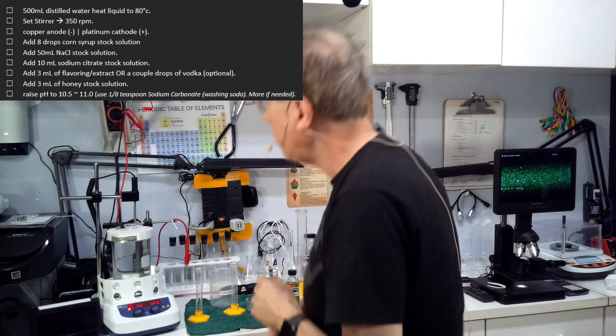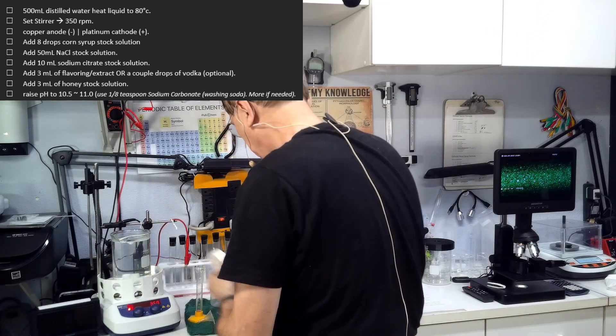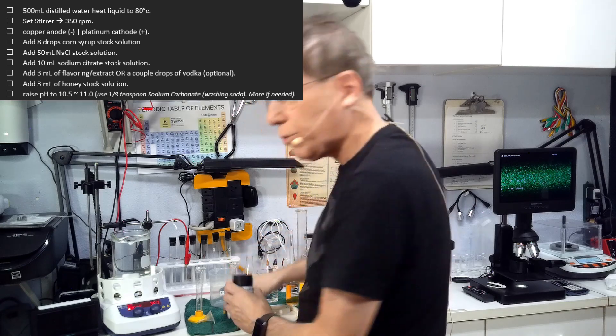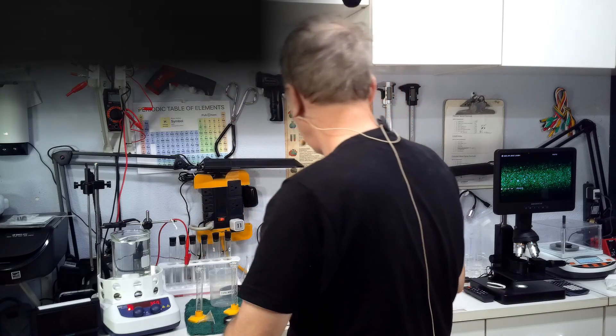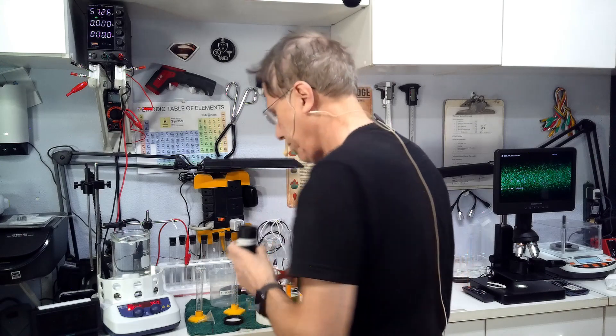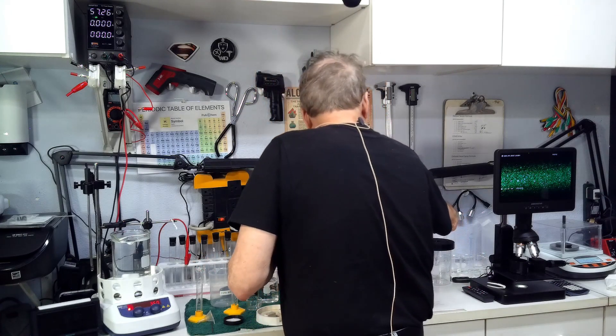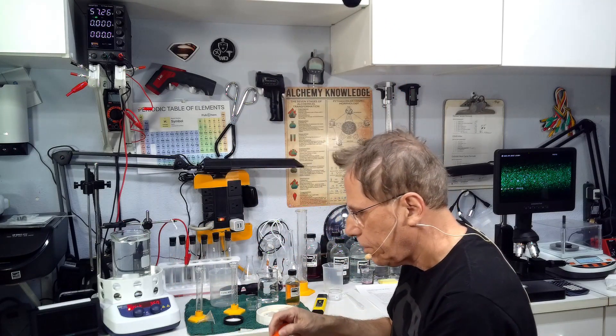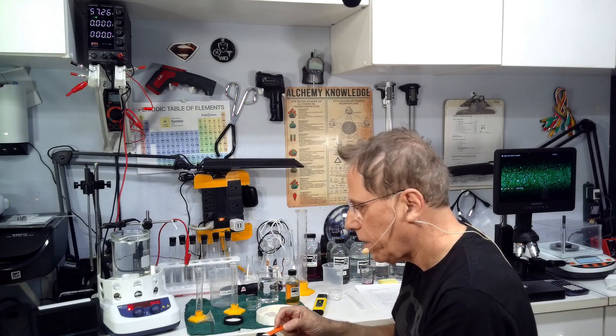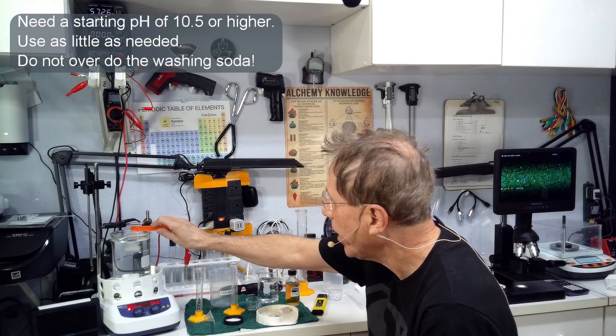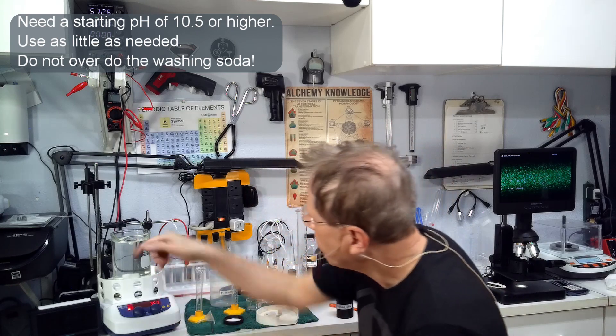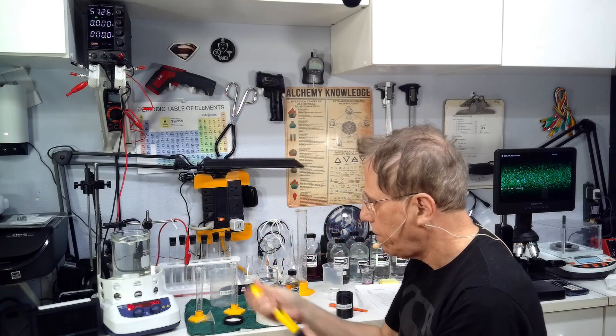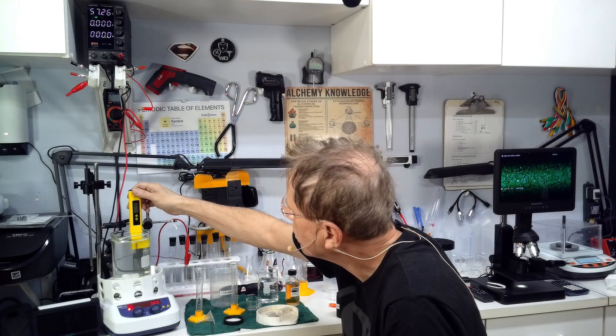Now we need to raise the pH. I like to raise the pH after everything is in. This is washing soda, it will bring the pH to 10.75. I'm going to add an eighth of a teaspoon to start with. Let that mix a little.